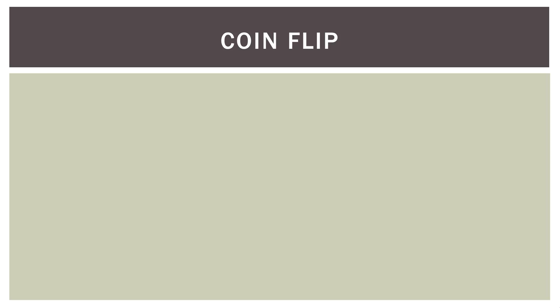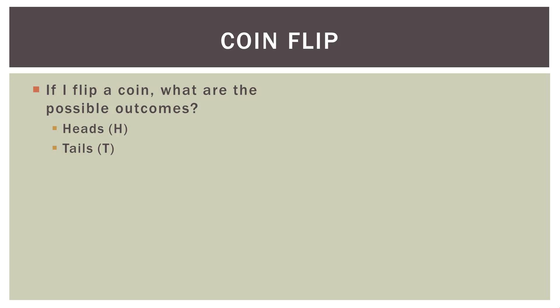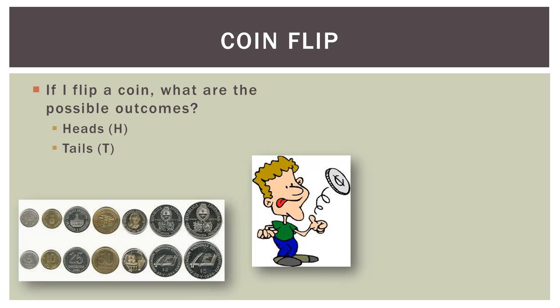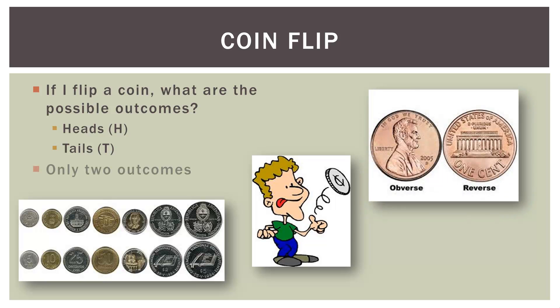I like to start with an example, so in this video we're starting with a simple coin flip — a quarter or whatever coin you might have. If I flip a coin, what are the possible outcomes? Well, I could get heads or I could get tails. Either way, I can only get two outcomes.